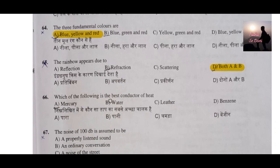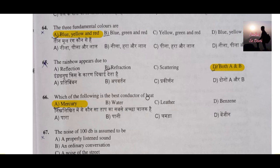Question number 66: Which of the following is the best conductor of heat? The answer is mercury. As you know, in thermometers we use mercury because even a very small temperature variation is captured by mercury and shown on the thermometer in degrees Celsius. So mercury is the best conductor of heat.